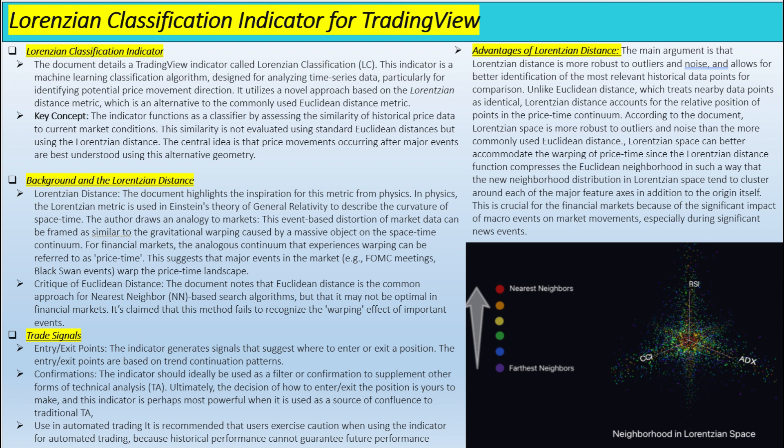That's where Lorentzian space comes in. It's a way of measuring distances that takes into account the warping of price-time caused by major events — like a surprise interest rate hike or a company's earnings report totally bombing. So instead of a rigid ruler, we're using something that bends and flexes with the market's mood swings. When a big event happens and prices go haywire, traditional methods would struggle to make sense of that, but Lorentzian space allows the algorithm to kind of see through the chaos and adjust for those distortions.